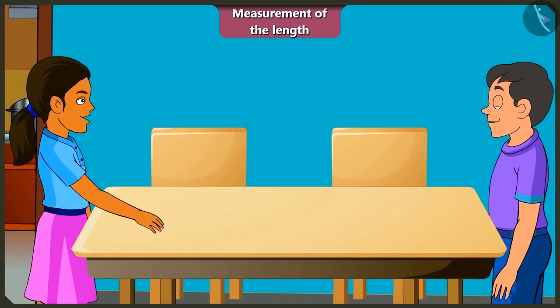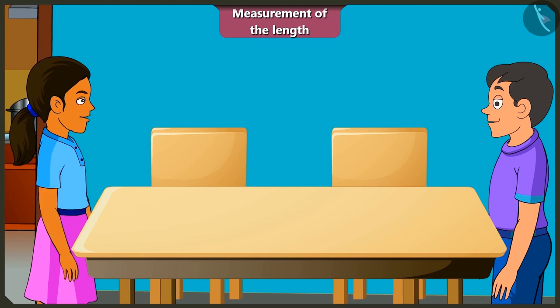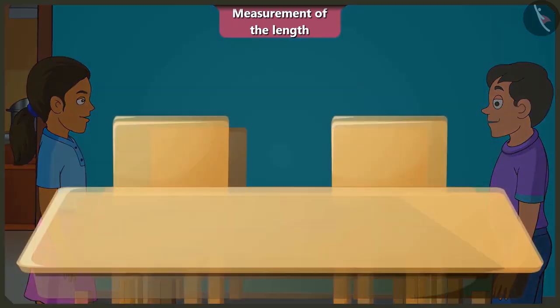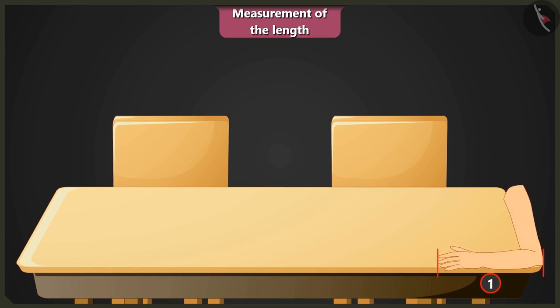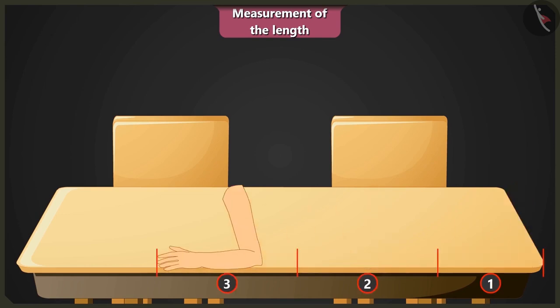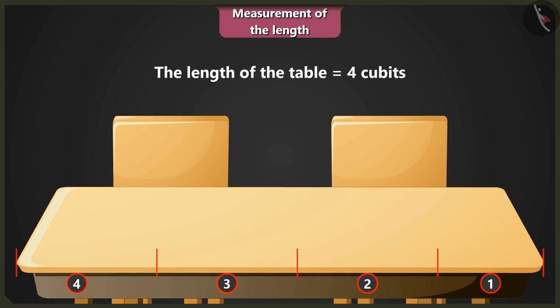Now measure this using your arm length as a unit. Then the length of this table is 1, 2, 3 and 4. The length is 4 cubit length of my arm.